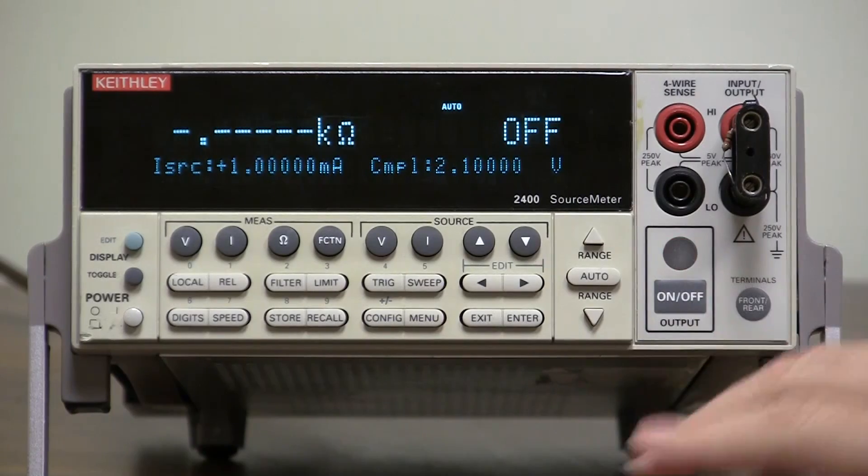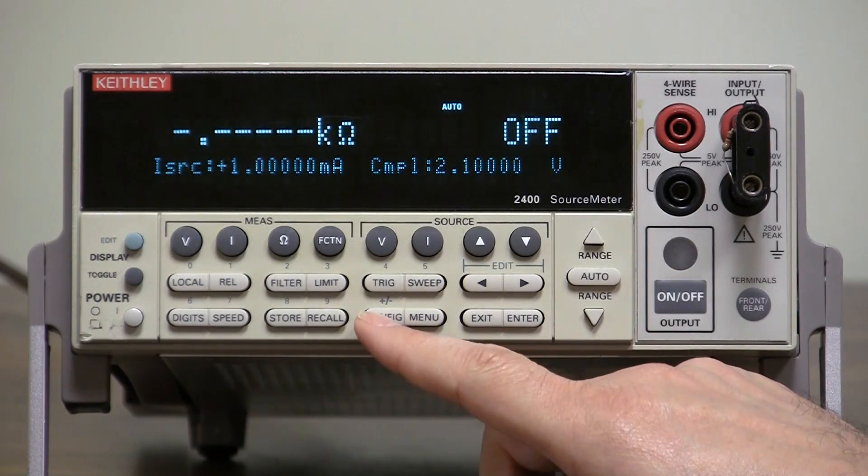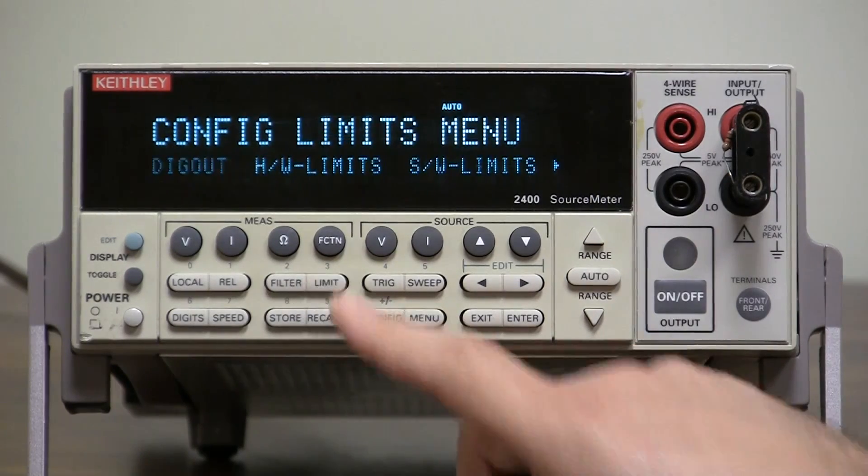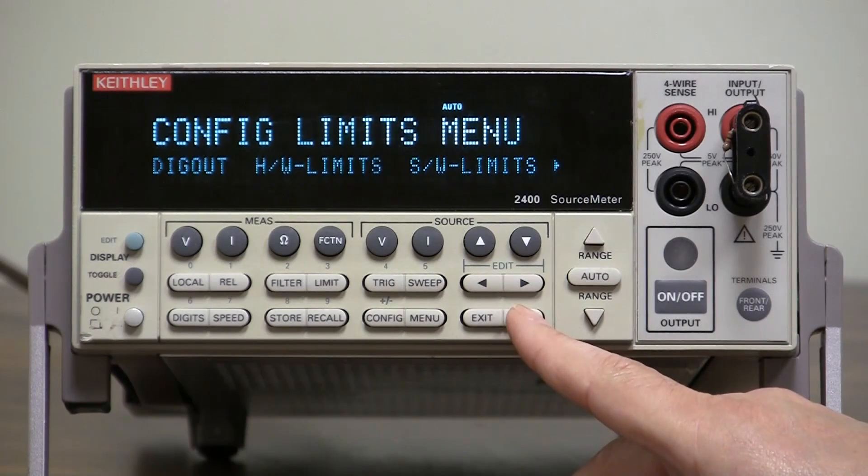Alright, let's turn it off and configure the limits. So to configure limits, you'd press the config button, then the limit button. Let's go to hardware limits and explain that in short.